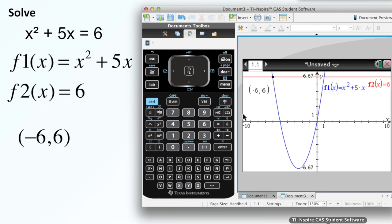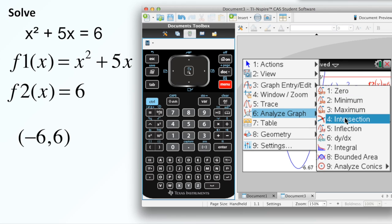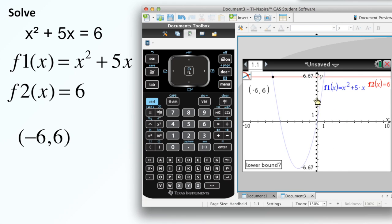Now let's go back to our graph here. Let's look at what the other one is over here. So notice how this one will stay here. I can go Menu, Analyze Graph again, Intersection. Anywhere on, again it says lower bound, anywhere on the left-hand side, it really doesn't matter. Then as soon as I drag it past that, it automatically pops up. And it says 1, 6.